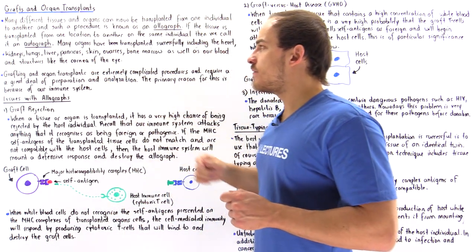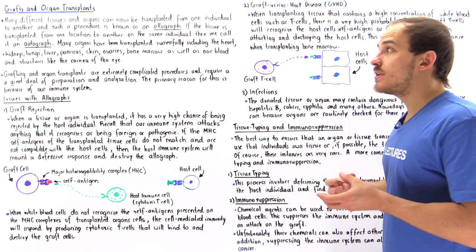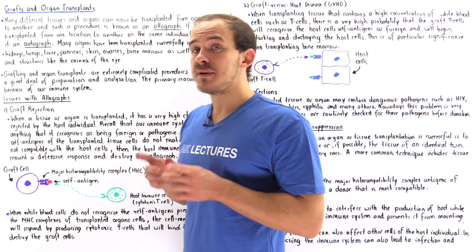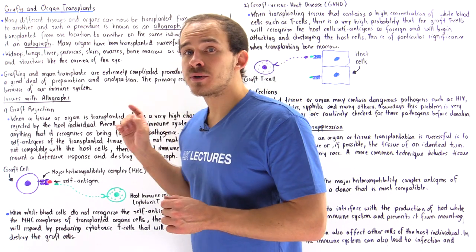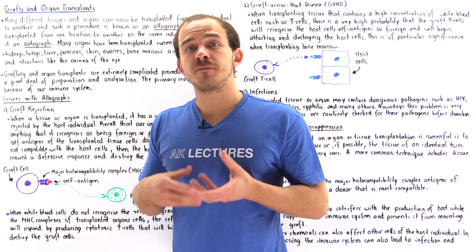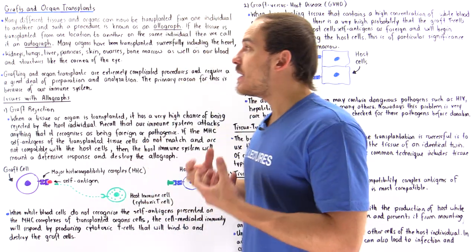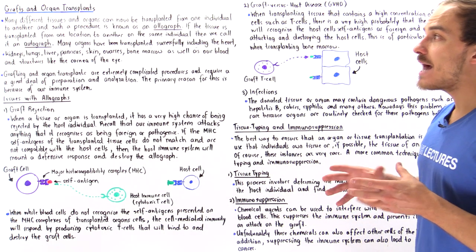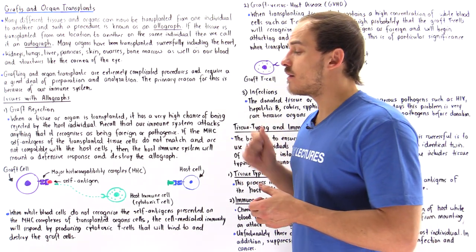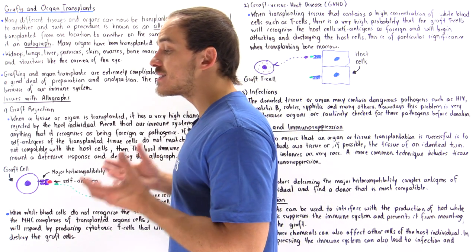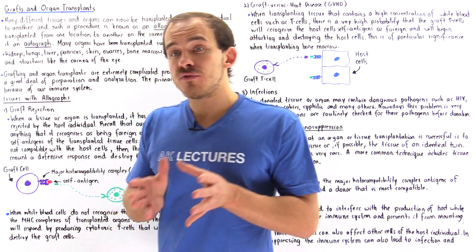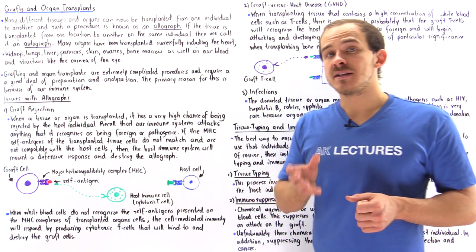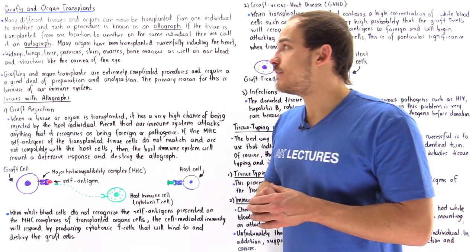The cornea of the eye is a relatively successful type of grafting because the cornea represents an immunologically privileged site, which decreases the complications involved. In fact, we can successfully graft a cornea removed from a cadaver and place it onto a living individual.